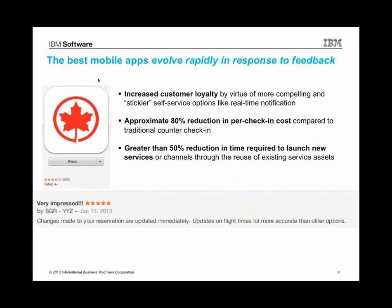The very best mobile apps evolve rapidly in response to feedback and needs. Here's a great example with Air Canada — a business type of mobile app. You're building consumer and business apps for your company that engage with people. With IBM's help, Air Canada has increased customer loyalty, had an 80% reduction in their check-in costs, and a 50% reduction in the time required to launch new services. Part of this was building a great mobile app, but part of it was also the back-end infrastructure that supports all these changes. By focusing on feedback, they've been able to build and maintain a high-quality mobile application.